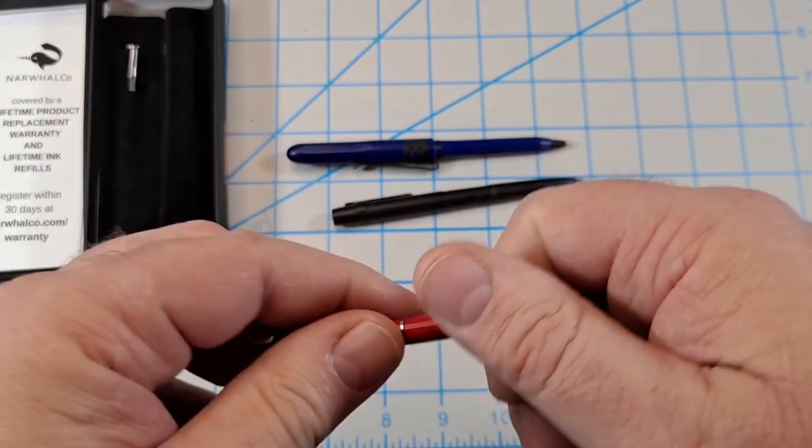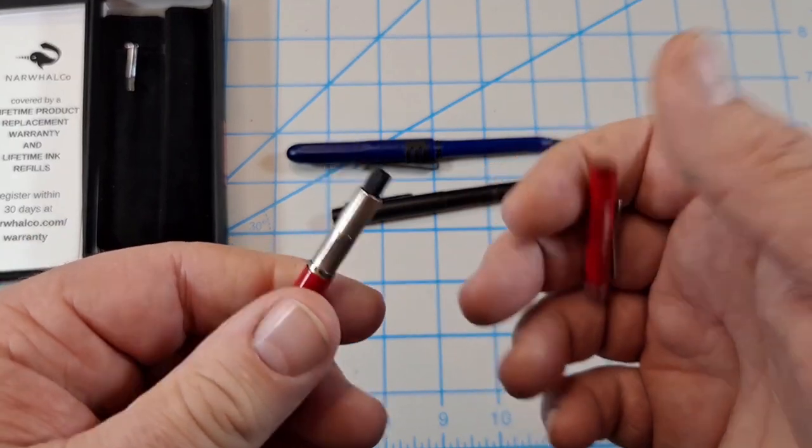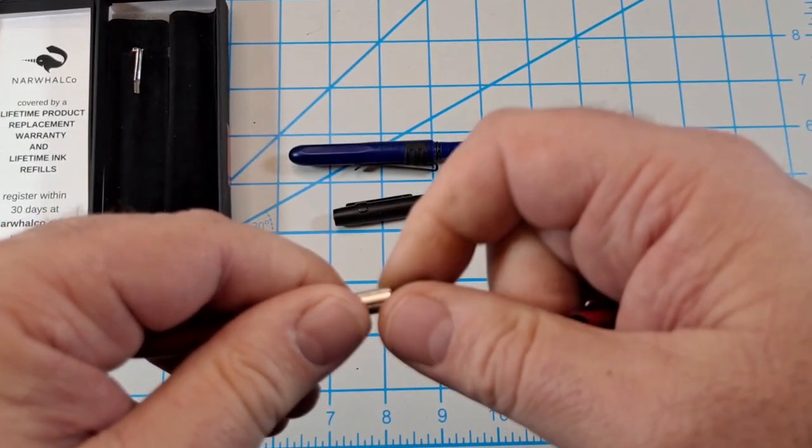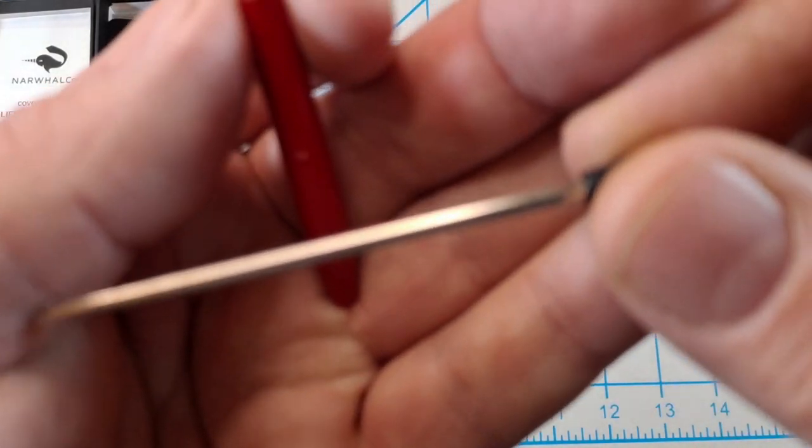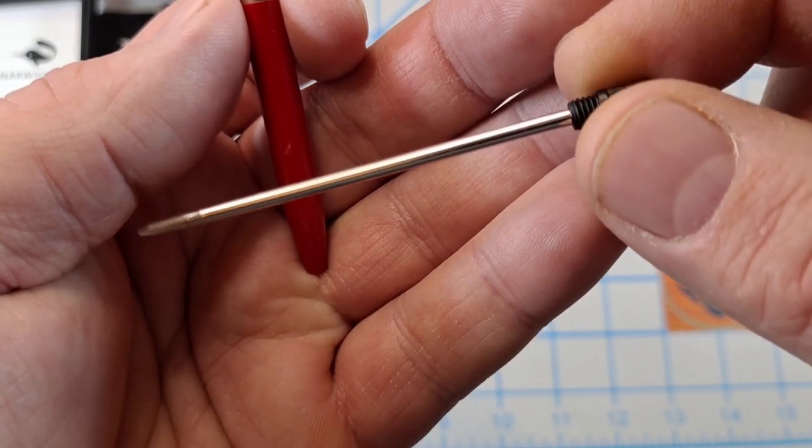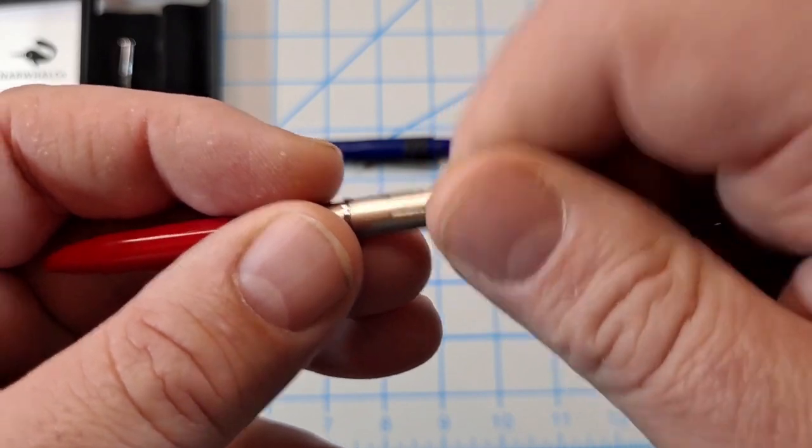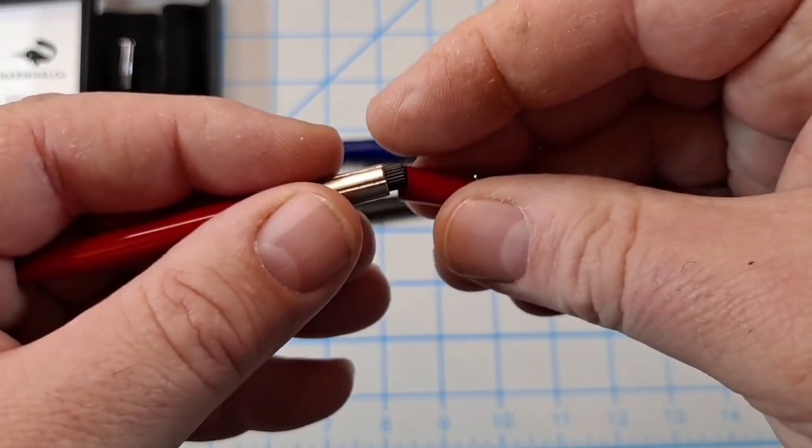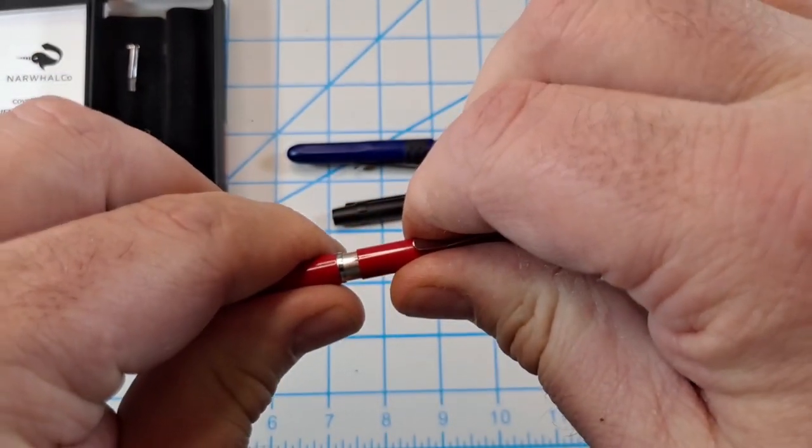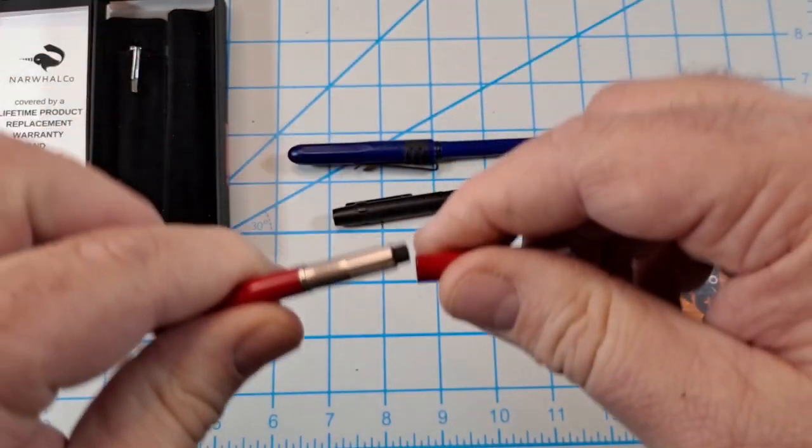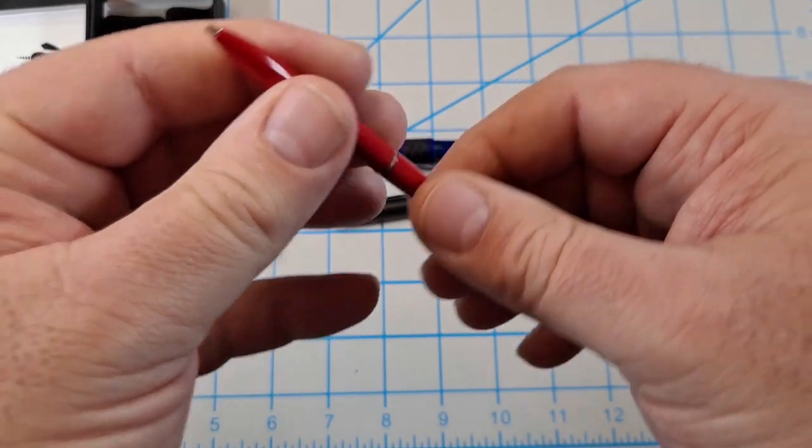I was going to show you how to replace the refill. You literally just pull the top off, unscrew it, there's the refill. You just put it back in, screw it, push the top on. Now that's got some retention, it's not just going to fall off. It almost creates some suction in there, so that's good.